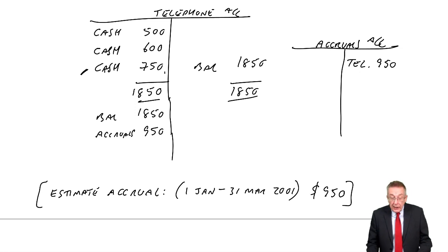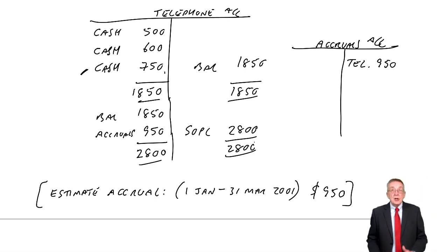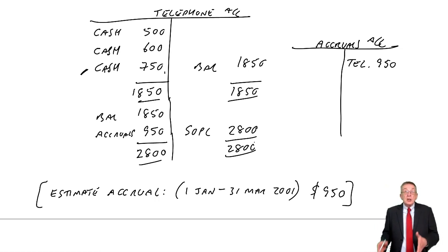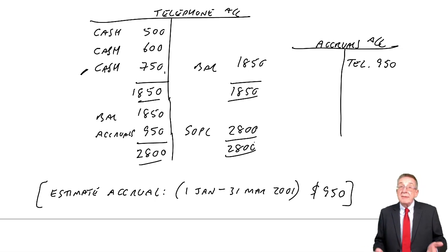Because how much is there now on telephone? The total is 2800. And as always, we can move the total to the statement of profit or loss. So our one entry at the end of the year has made sure we've got the correct expense on the statement of profit or loss. And the telephone account, the balance is now zero, ready for next year.